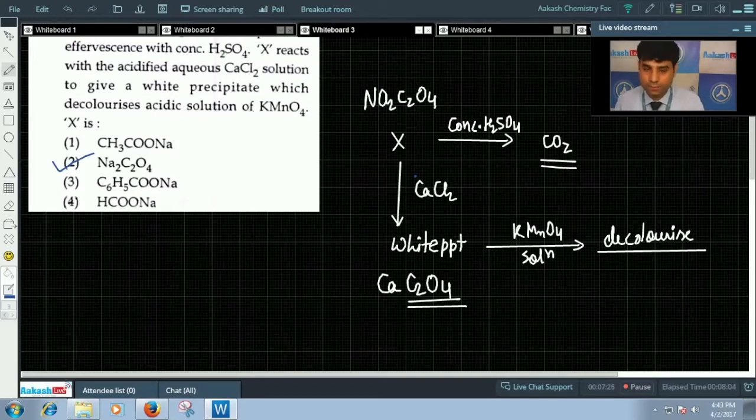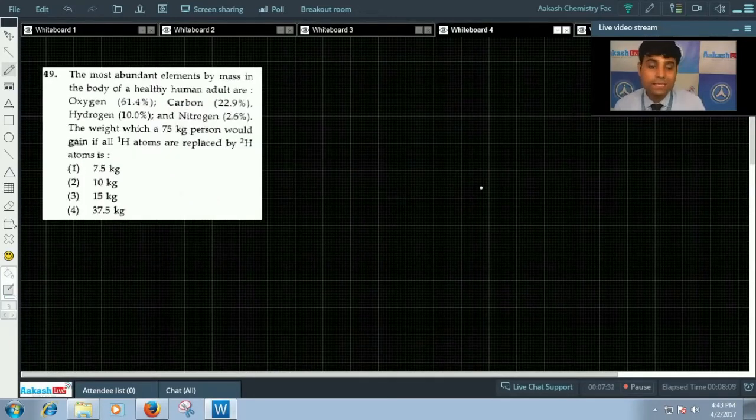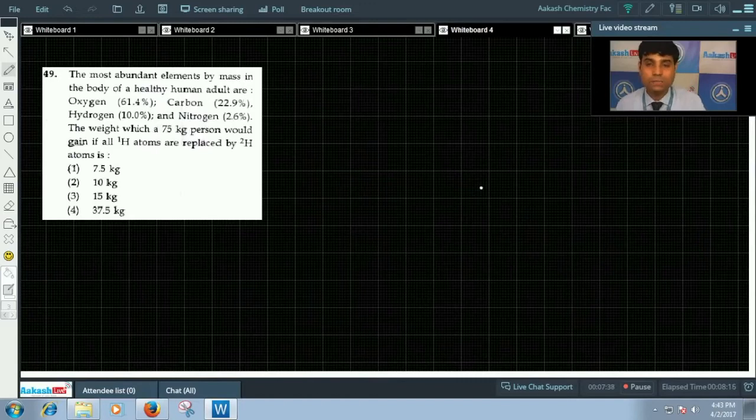Now let's move to the next question, which is question number 49. Question 49 says: the most abundant elements by mass in the body of a healthy human adult are oxygen, carbon, hydrogen, and nitrogen. Their percentages are given. The weight which a 75 kg person would gain if all ¹H atoms are replaced by ²H atoms is.